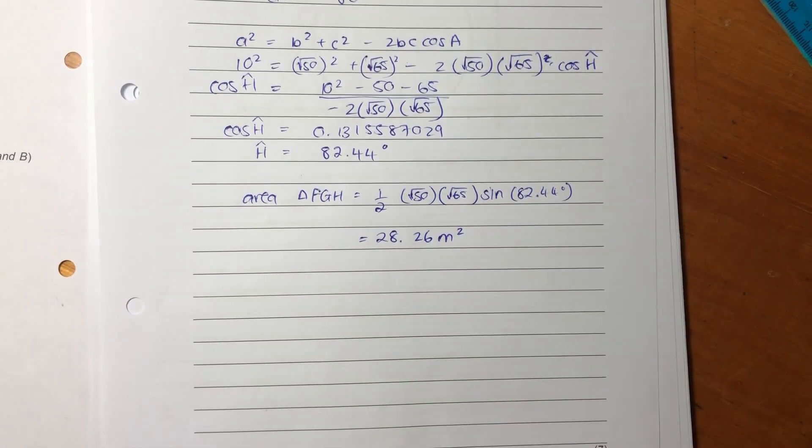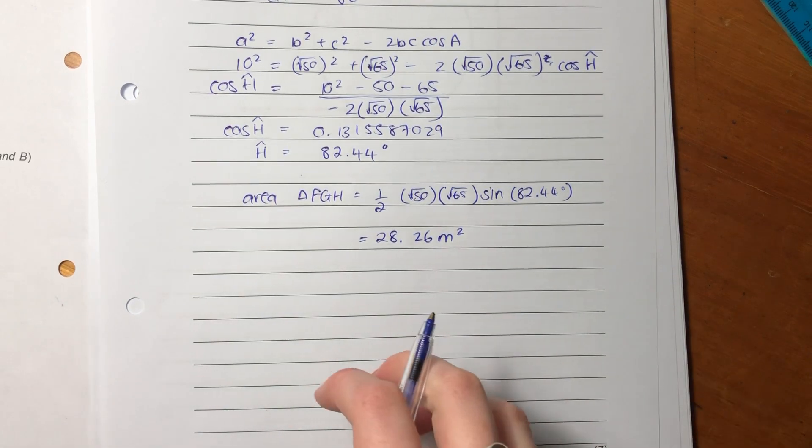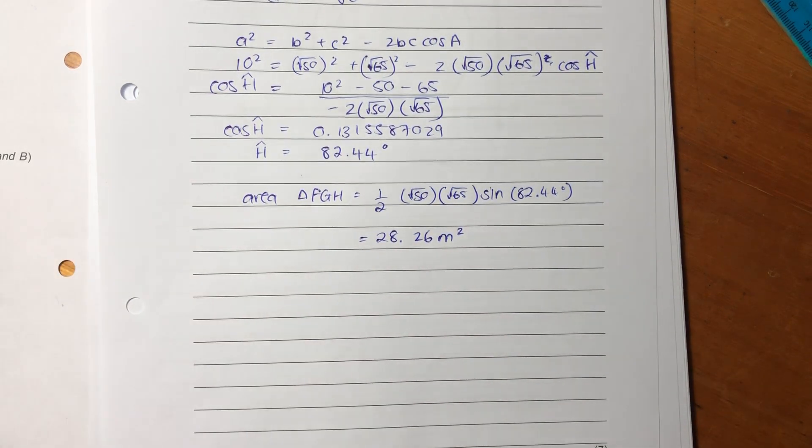So it's important to make sure that you put in units because area is very specific to the squared units. And you want to indicate to your marker that you are remembering that this is actually what you are calculating. So that's the end of this question. Let's now move on to the next one.